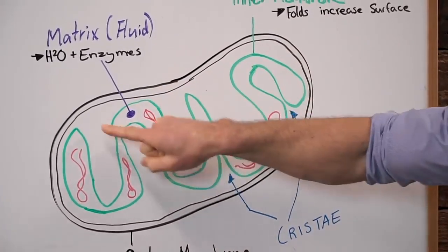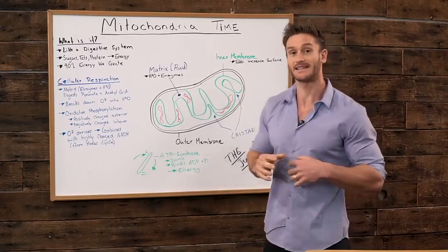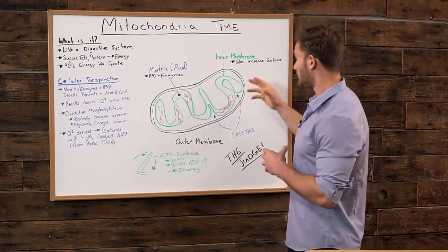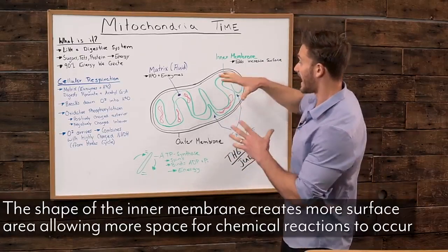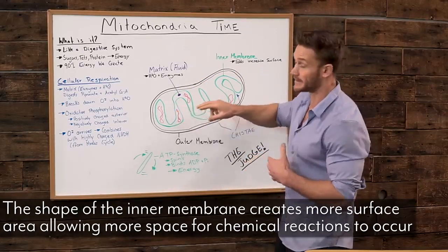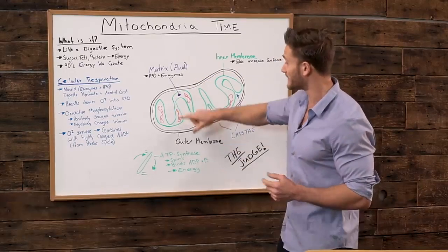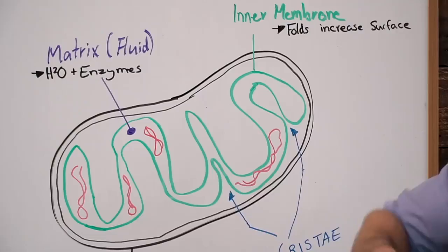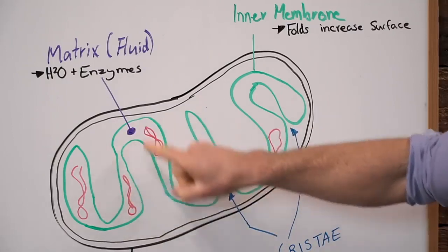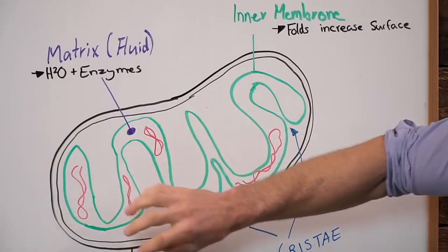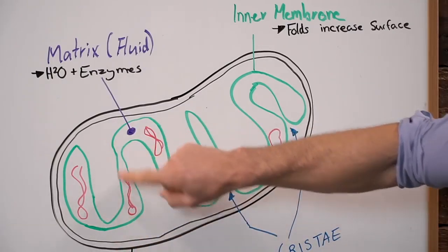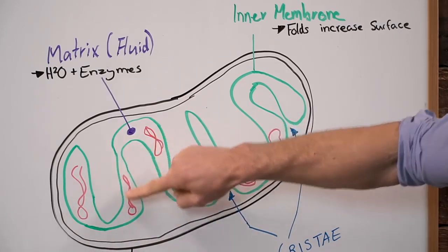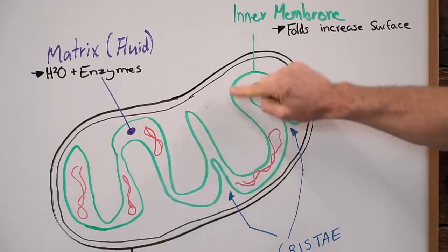You see how it's squiggly? The reason it's squiggly is because it's very efficient. It has a lot more surface area. The body has evolved over time and determined that in order to pack more energy into a single cell, we need to combine as much surface area as possible. So it's created this inner membrane with all these squiggles in it. Surface area is maximized.